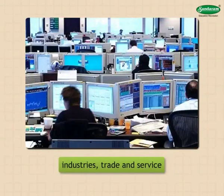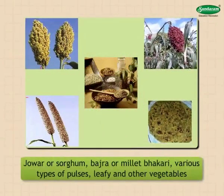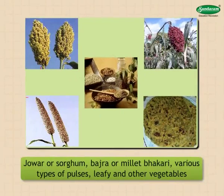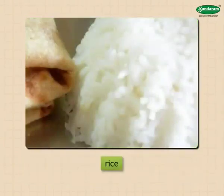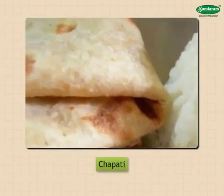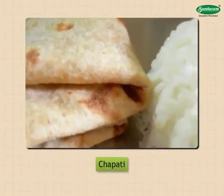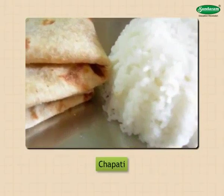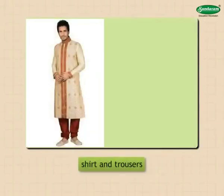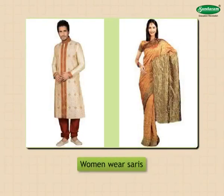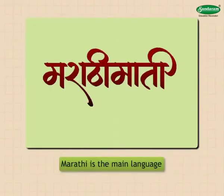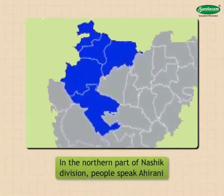Jowar (sorghum), bajra (millet) bhakri, various types of pulses, leafy and other vegetables are included in the diet of the people from the plateau region. However, in the eastern part of the state, rice forms the major item of people's diet, along with chapati and different pulses. Because the climate here is hot, dry, and extreme, people use cotton clothes. Men use shirt and trousers; women wear sarees. Some people use pyjama, dhoti, cap, etc. Young people prefer modern clothing. Marathi is the main language; in the northern part of Nashik division, people speak Ahirani.